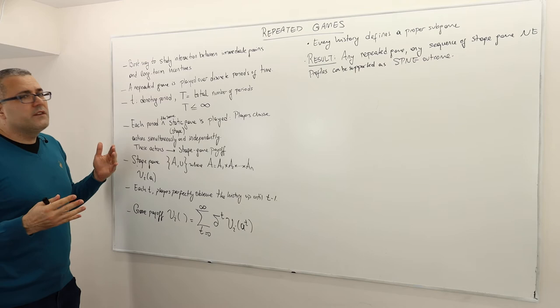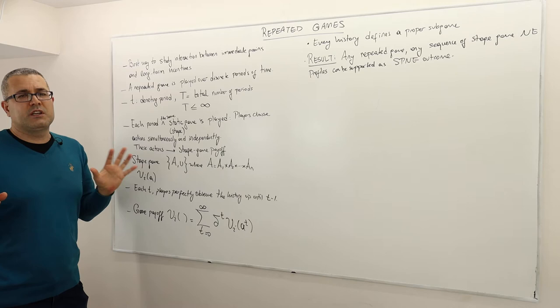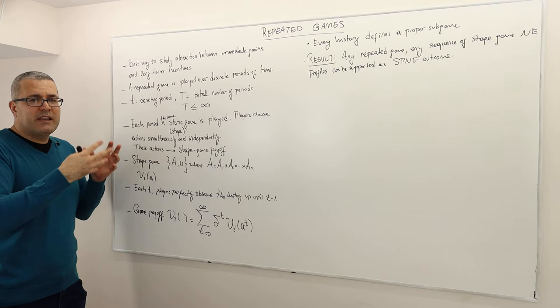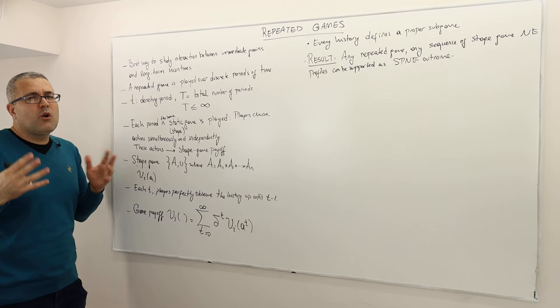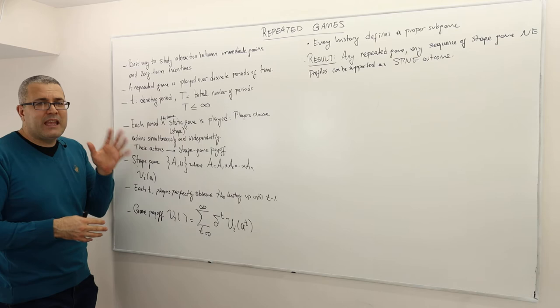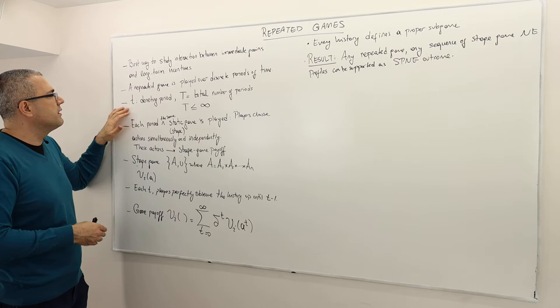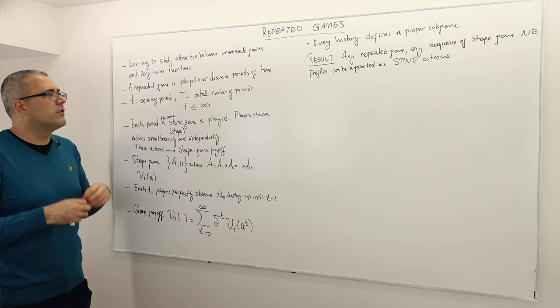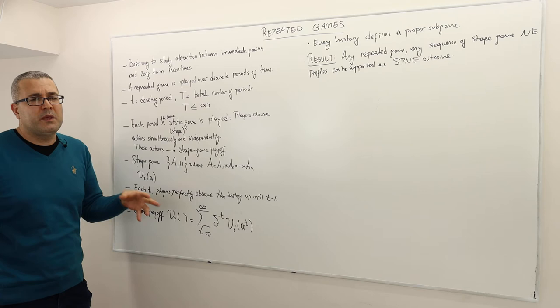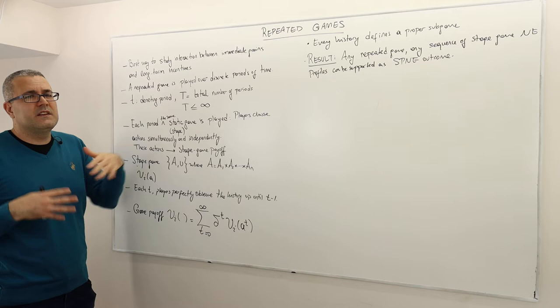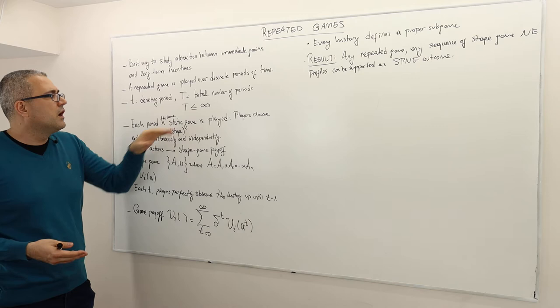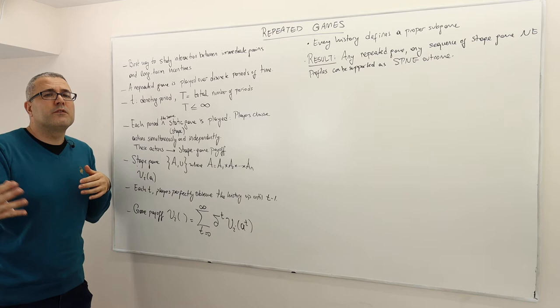So what is a repeated game? A repeated game is played over discrete periods of time — the same game is repeated again and again, with periods being discrete: period one, period two, period three, et cetera. We normally start from period zero. We let small t denote the number of the period and capital T denote the total number of periods in the game. So T can be finite or infinite. With some abuse of notation, when we say T equals infinite, we actually mean the game may continue forever.